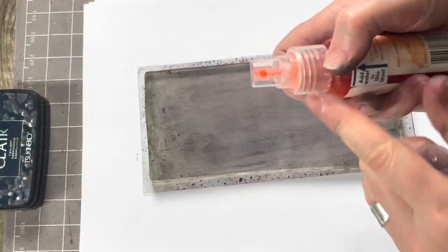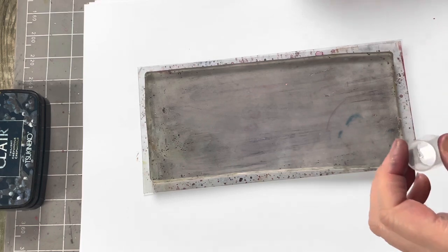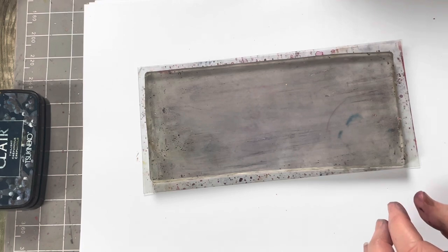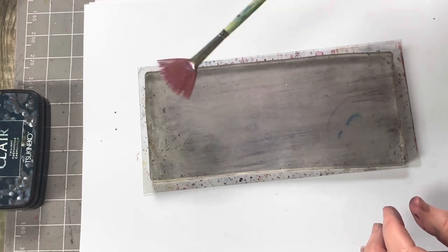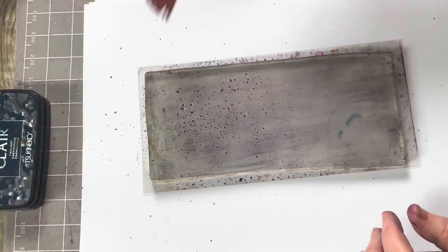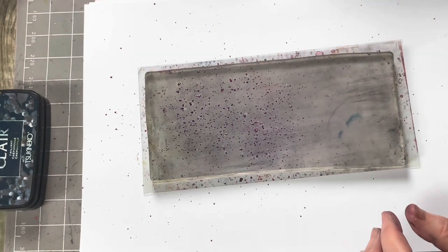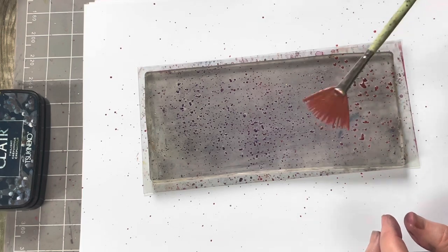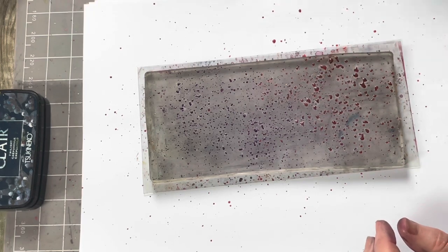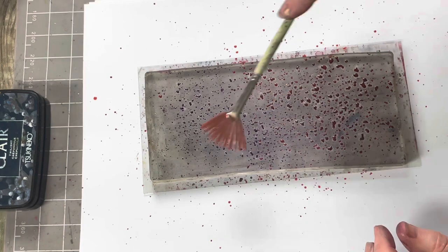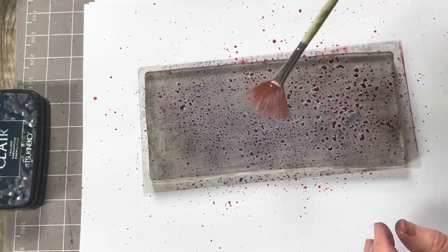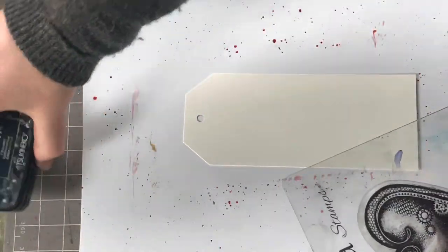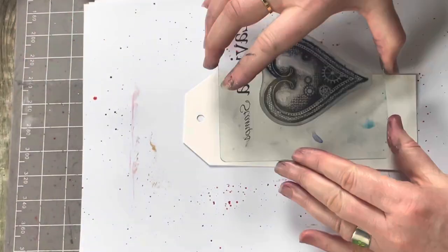Popping these down on the side here, adding a little water. I'm picking up the pink first and then I'm going to bring in some of that gorgeous orange. Pop that to the side, ink up in the twilight, pop that down.